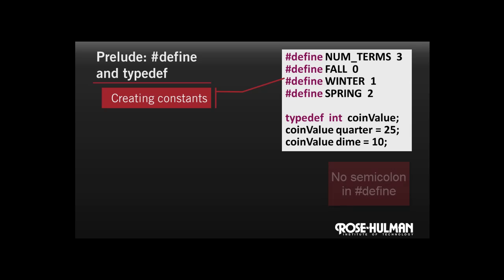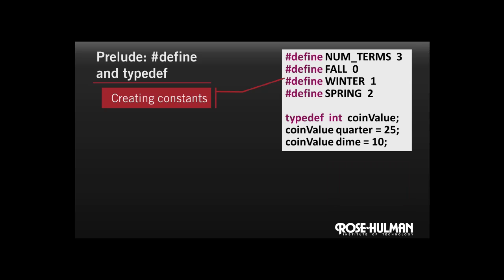Note about the syntax: you'll notice that there's no semicolon at the end of the pound define statement. That's because before the program is even compiled, what's called a preprocessor goes through and substitutes three in place of everywhere it saw num_terms. So you wouldn't want a three with a semicolon plugged in in place of num_terms.